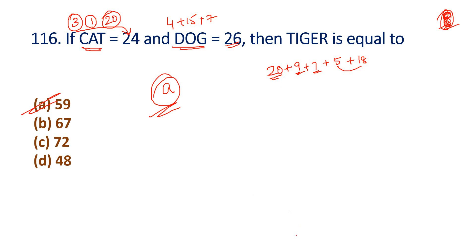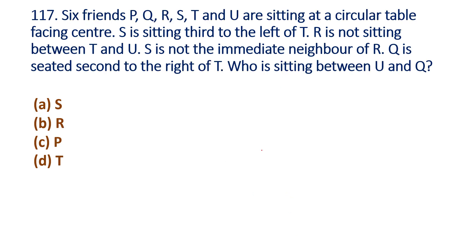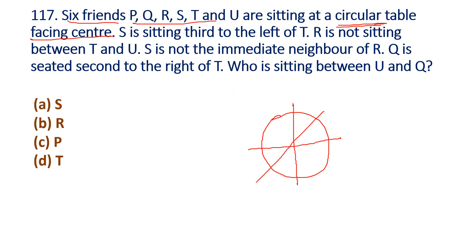Question 117: We have a circular seating arrangement. Six friends P, Q, R, S, T, and U are sitting at a circular table facing the center. First clue: S is sitting third to the left of T.